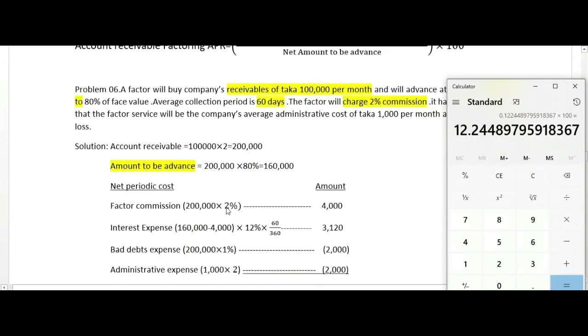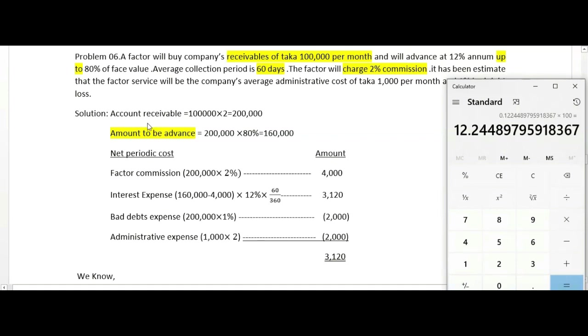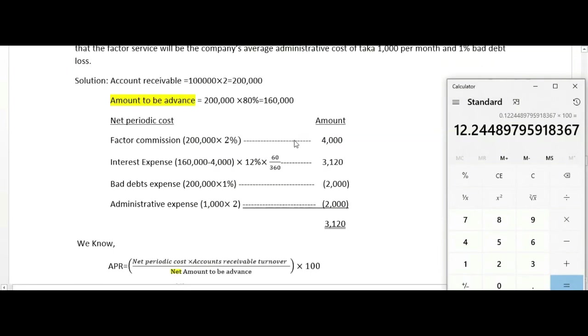For account receivable factoring: convert the collection period to months, calculate account receivable total, determine amount to be advanced at 80 percent, then calculate net periodic cost including factor commission, interest expense, bad debt expense, and administrative expense.